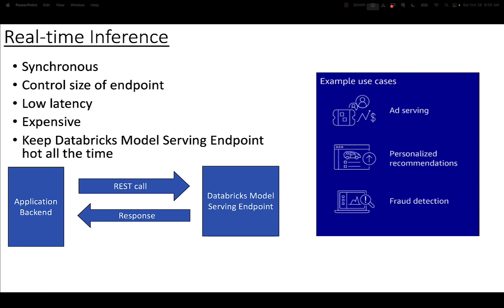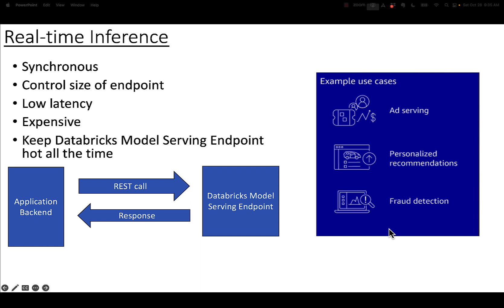It's really important if you need this solved that you use a model serving endpoint that is hot all the time, because you don't want to waste the spin-up time. But if it's hot all the time, it's going to be expensive, which means it's critical that you control the size of the endpoint to get the exact size that you need. Example use cases for this would be ad serving, personalized recommendations, or fraud detection — all very good reasons to keep a model serving endpoint hot all the time.